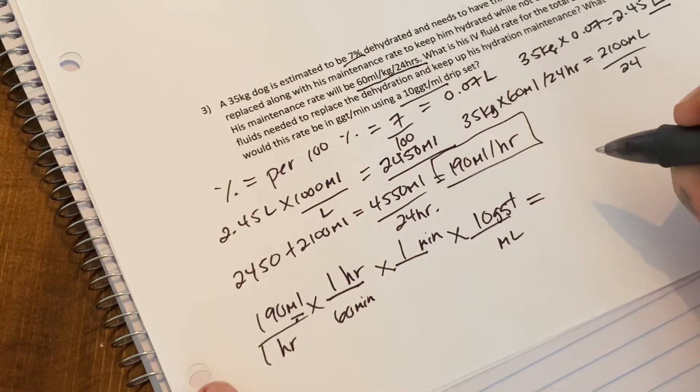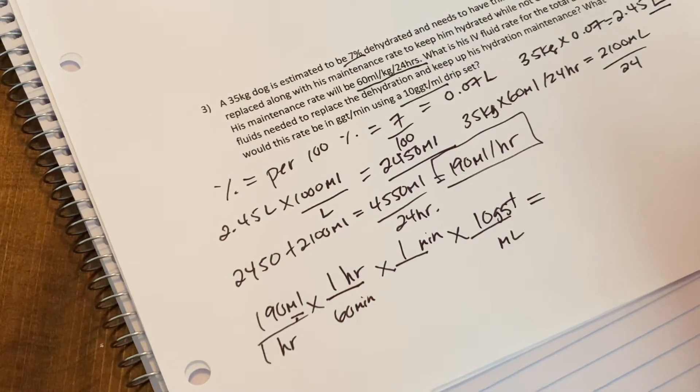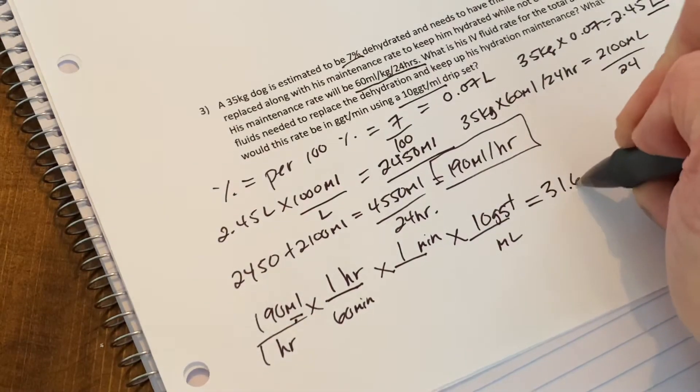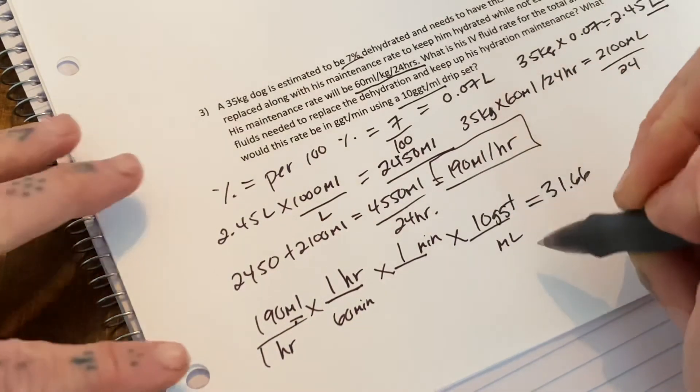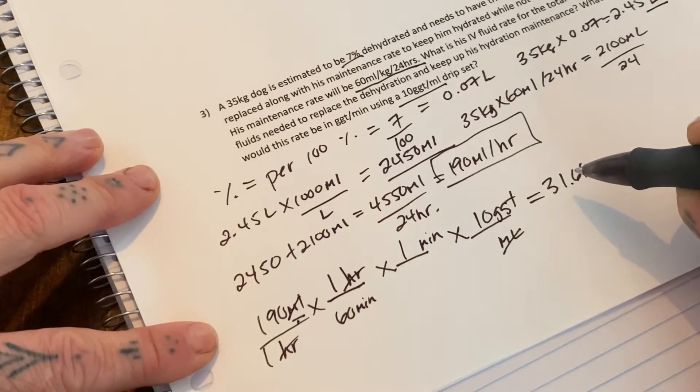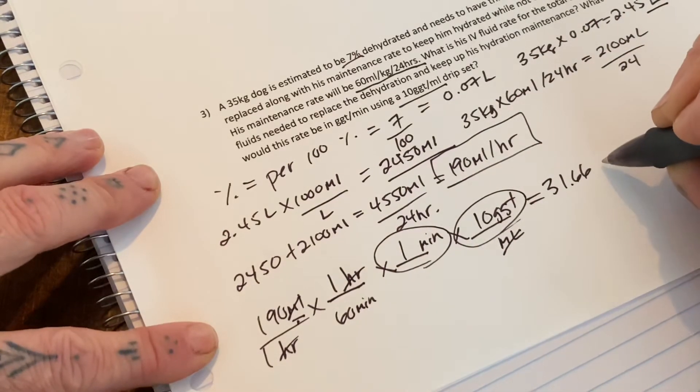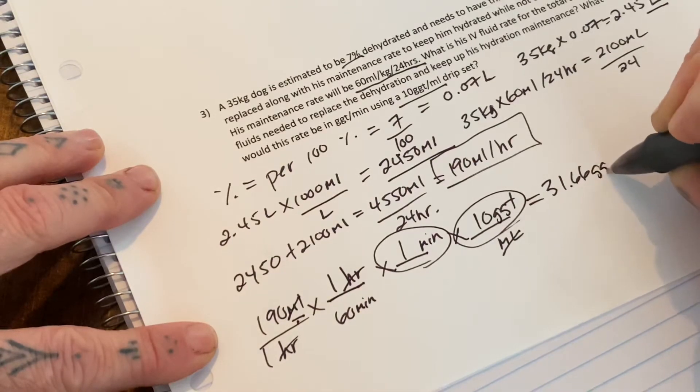So when we do this, it equals something that doesn't make sense at first, but so 190 times one hour over 60 minutes so divide by 60, and then times 10. So this equals 31.66 and you can cross these out so you know where you're standing. So mil gets crossed out, hour gets crossed out, minute shouldn't be crossed out because this is what we need, and drop. So we're down to 31.66 drops per minute.